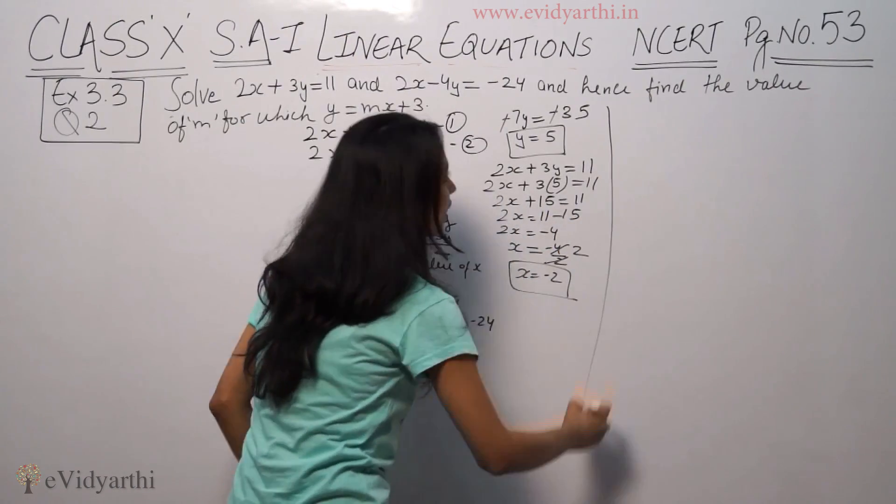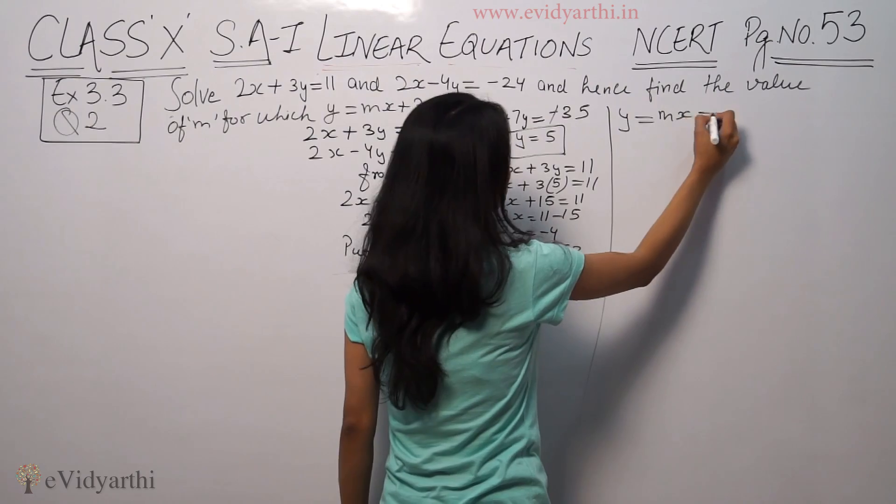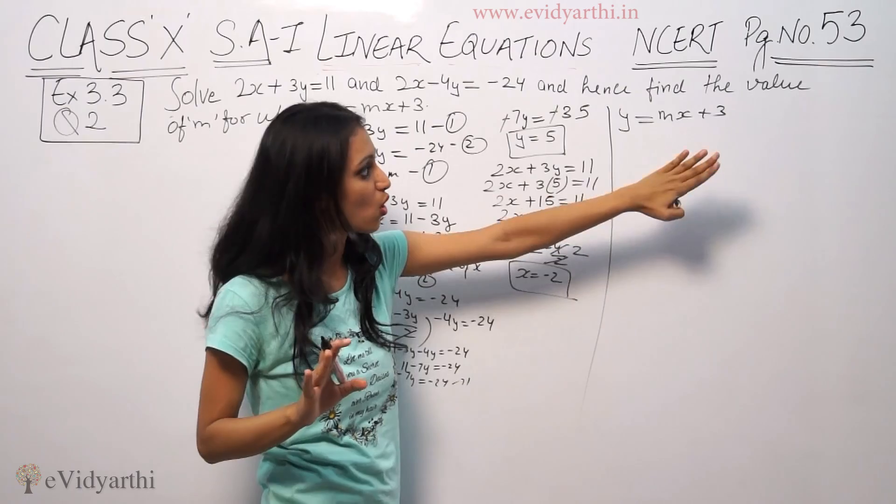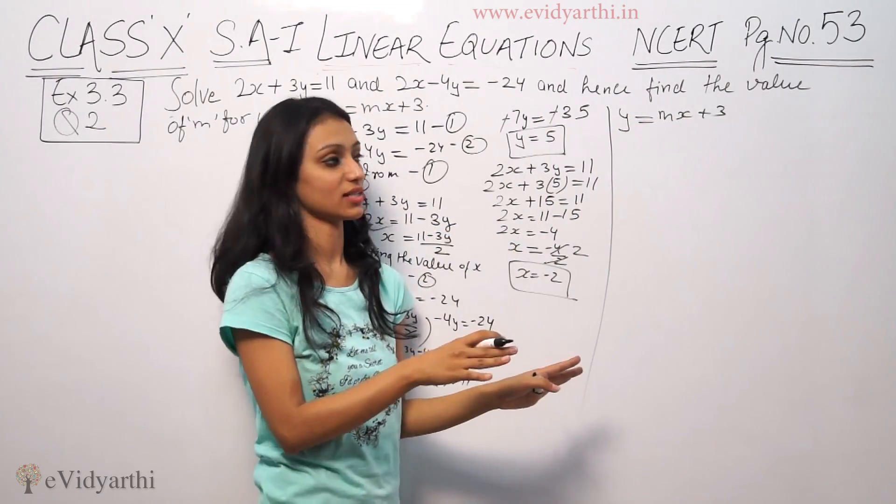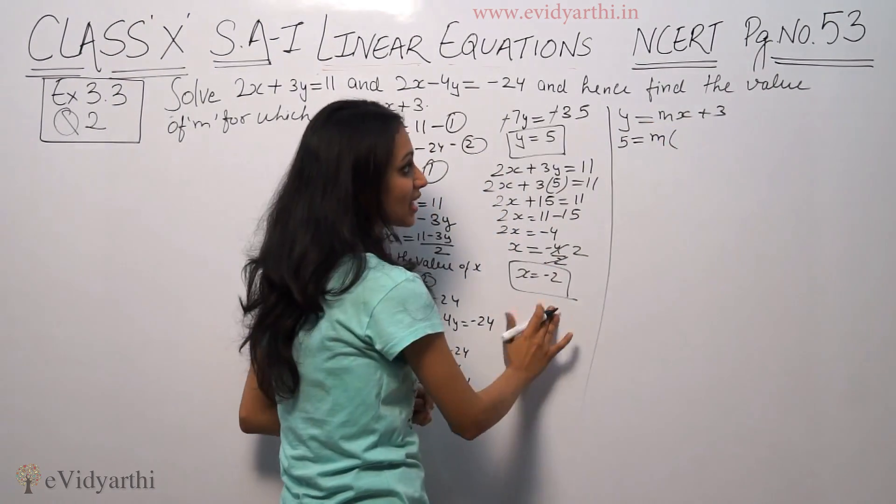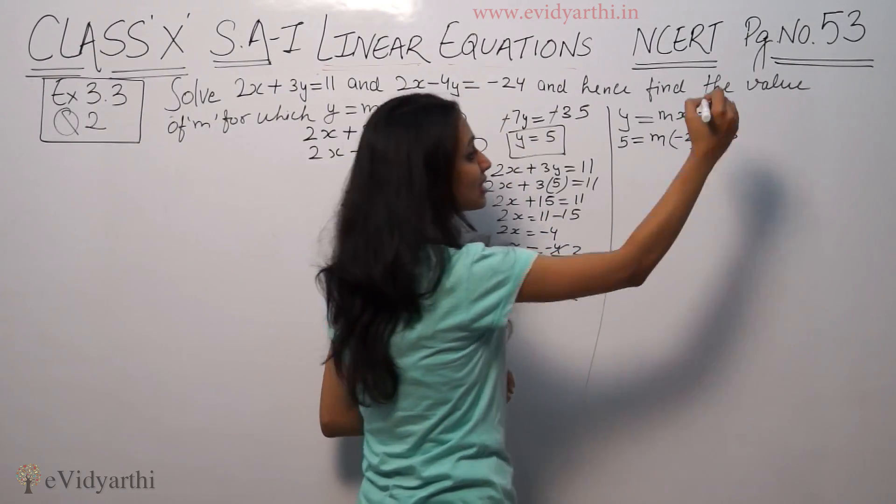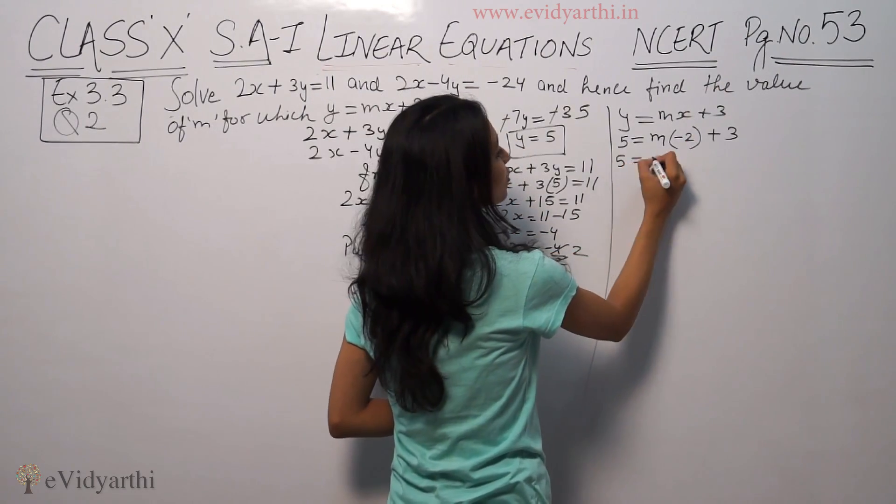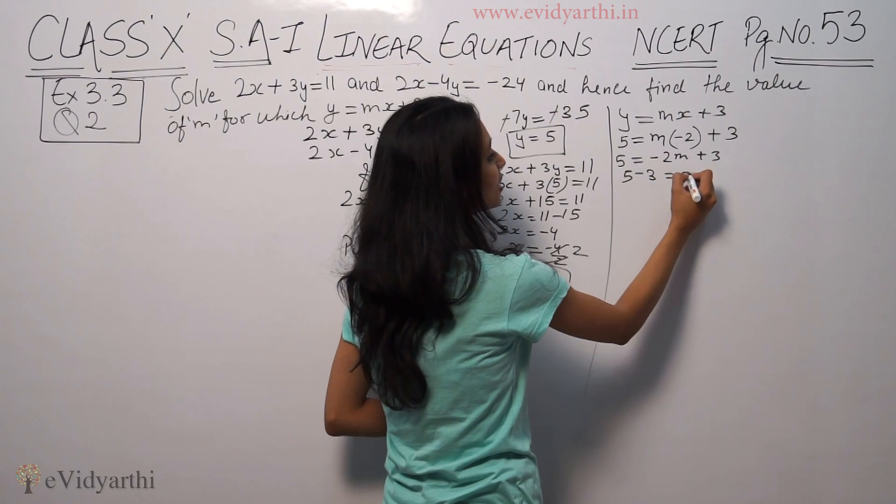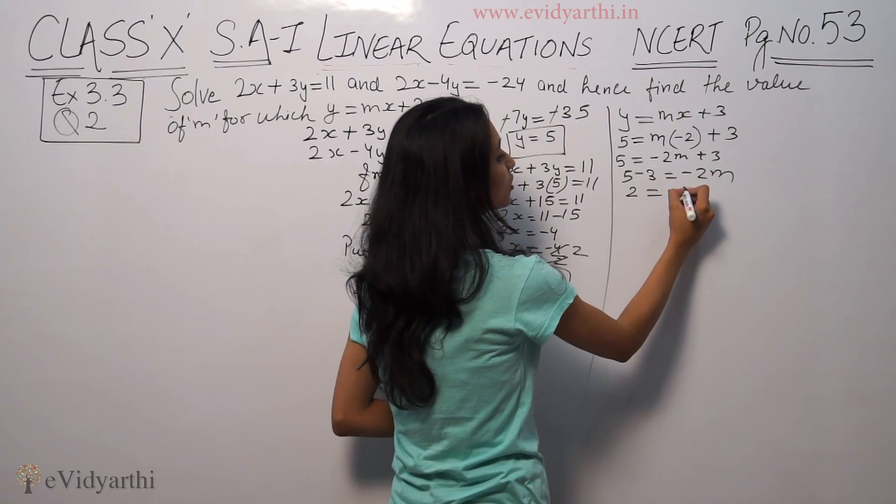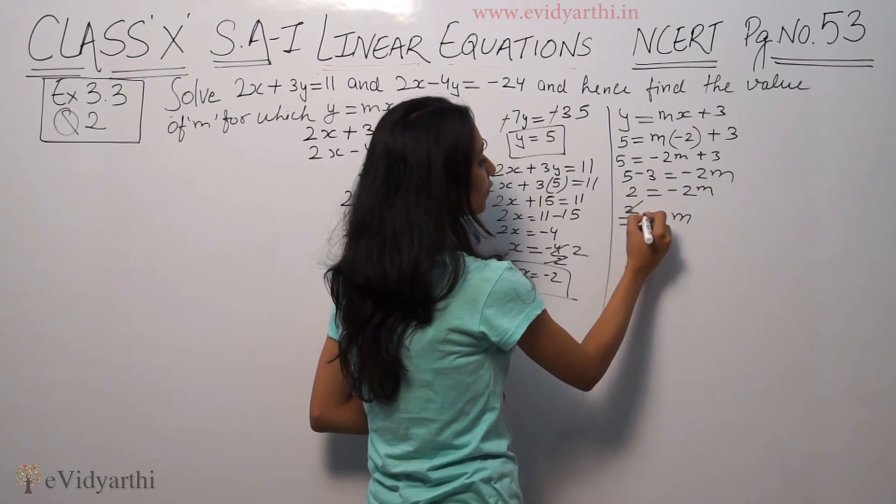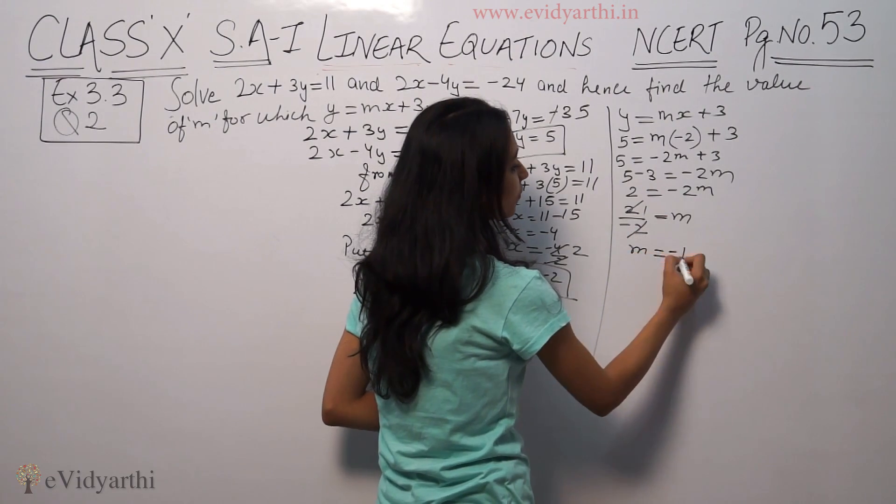We have the values x equals minus 2 and y equals 5. Now we find m from the equation y equals mx minus 3. So 5 equals m times minus 2 minus 3, 5 plus 3 equals minus 2m, 8 equals minus 2m, m equals minus 4. Wait, correction: 2 equals minus 2m, so m equals minus 1.